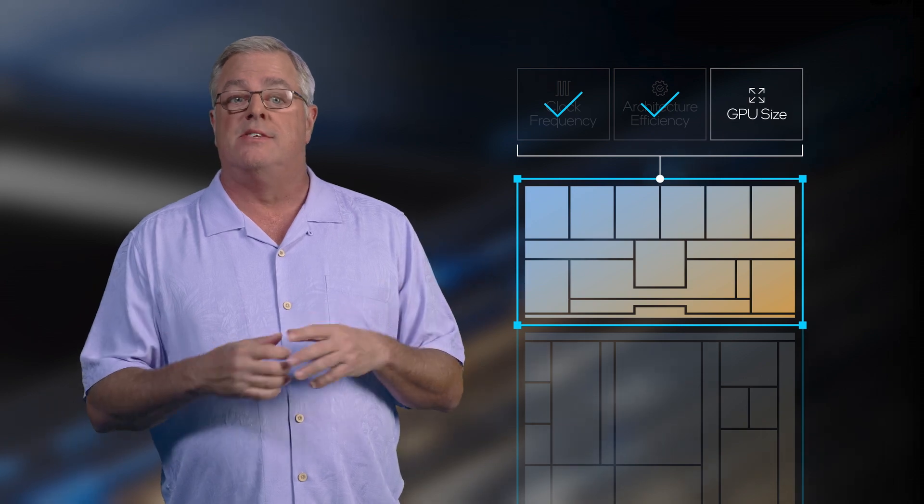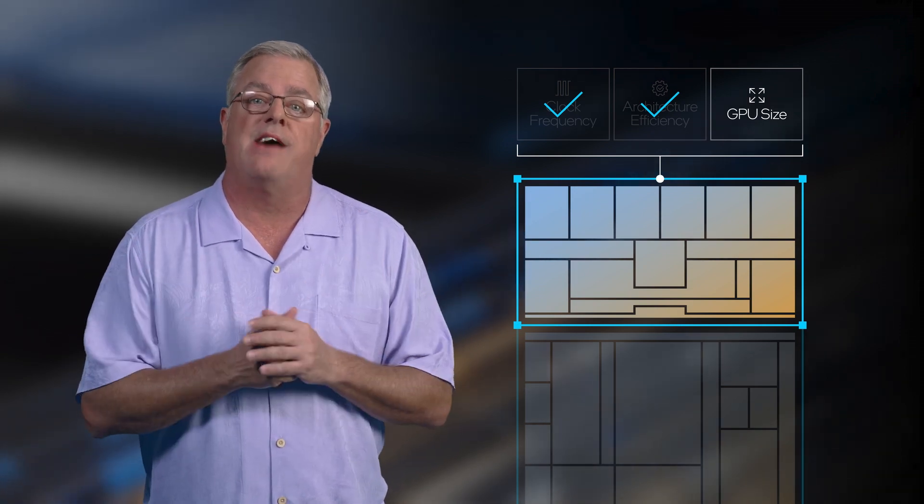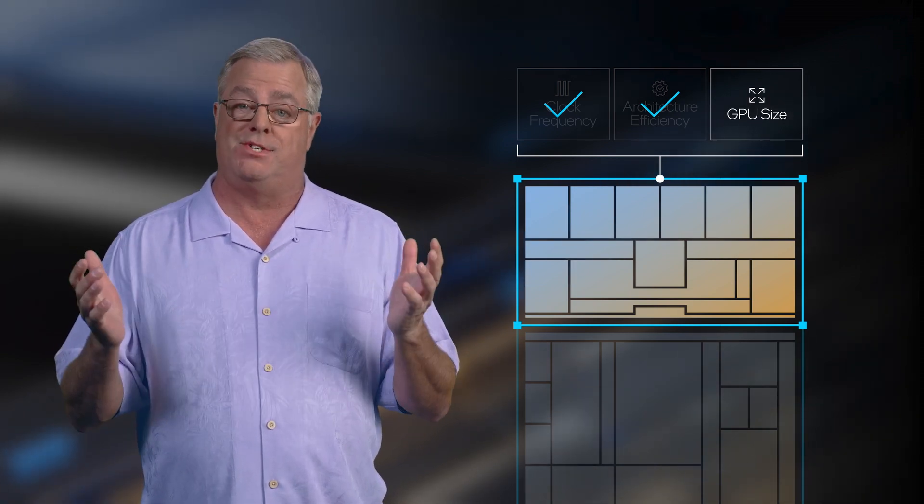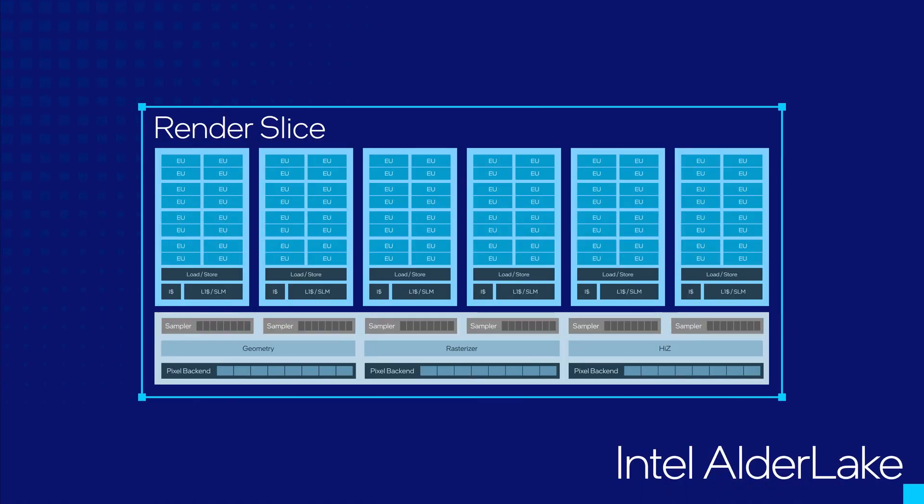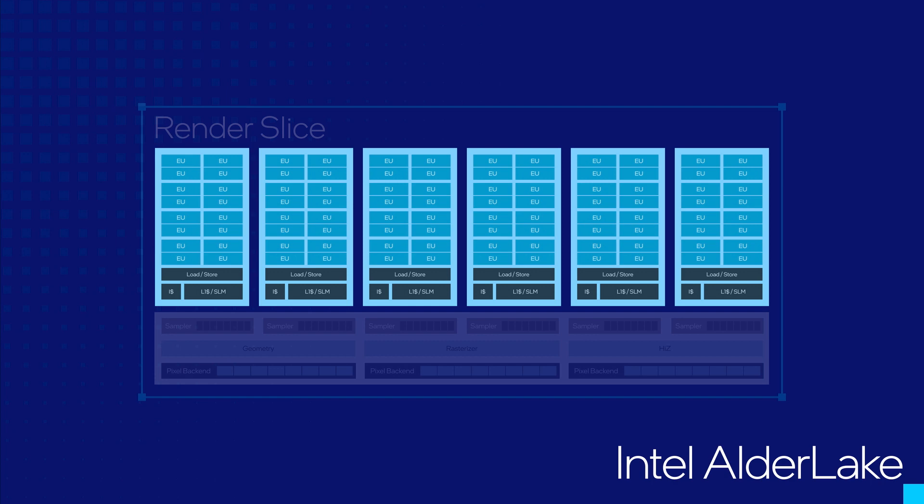I've talked about clock frequency, talked about efficiency, now let's have a look at how we've created a bigger GPU. As a baseline, let's start with the GPU that was inside our previous generation. It came with six groups of 16 execution units, the predecessor of our Xe-Vector engine.